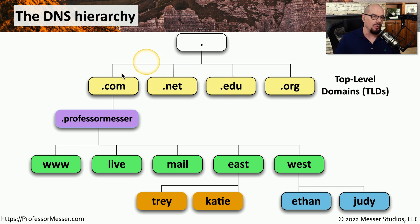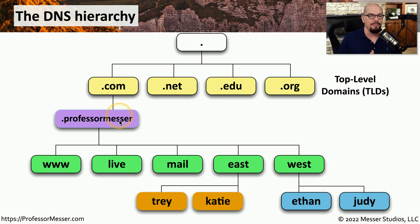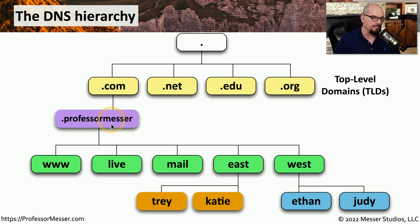ProfessorMesser.com would be the next layer in this hierarchy. So you can see underneath .com, we have .professormesser. And of course, there may be multiple servers at ProfessorMesser.com. If you go to my website, then you're visiting www.professormesser.com. But I might have a mail server, which is mail.professormesser.com.